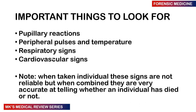The next thing I do is get a pen torch and swing it into the eyes of the patient. I swing it into the left eye and observe the reaction in the left pupil, then the right eye and observe the reaction in the right pupil — checking both direct and consensual responses. When a patient has actually demised, both pupils will be fixed and dilated and will not be responding to light. That's the third thing I check for.